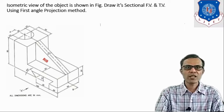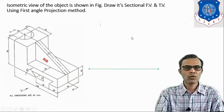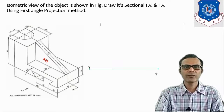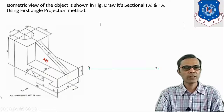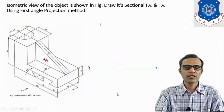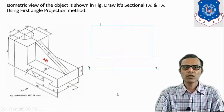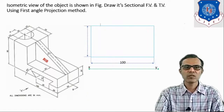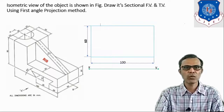Now we can start drawing. First of all, draw the XY reference line. From the front view direction we can see two dimensions of the object: length and height. Length is 100 and height is 60. Draw a rectangle of 100 by 60 mm size — this is the block in which we will draw the front view of the object.